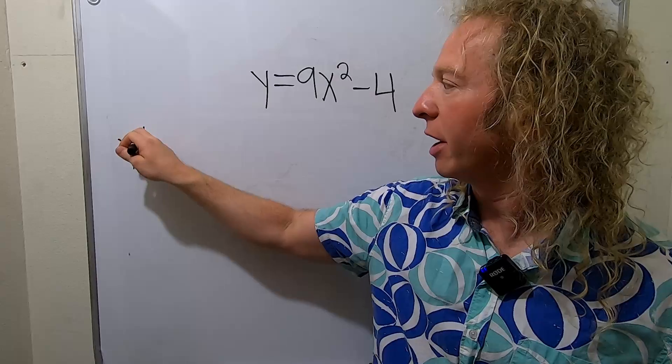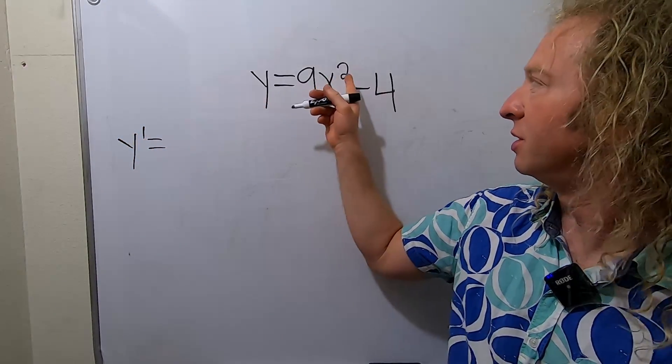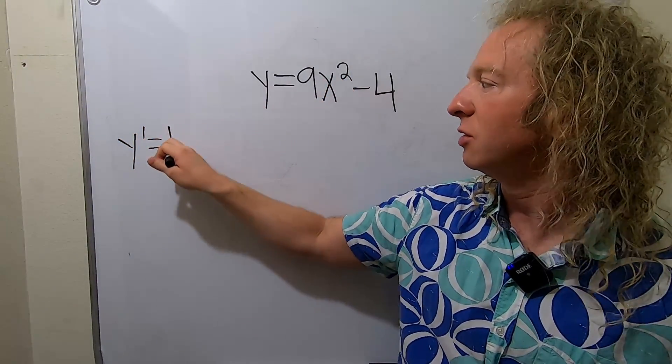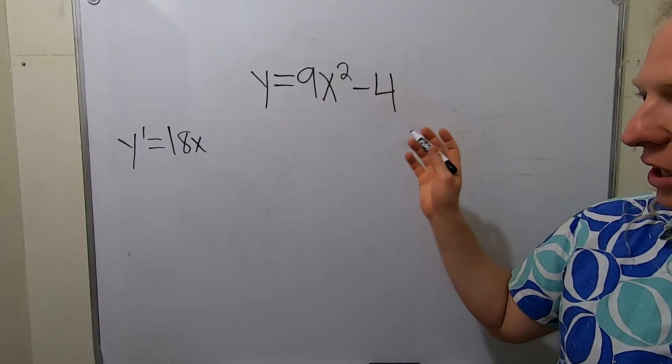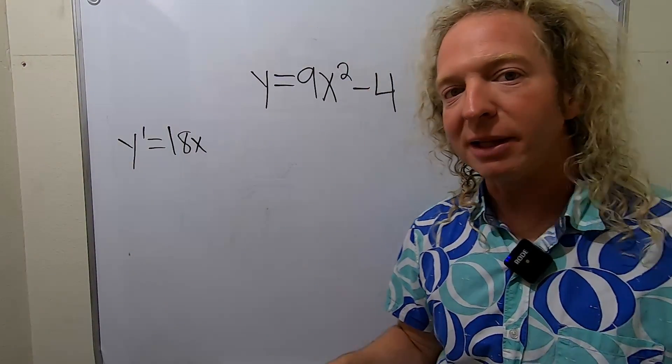You might say y prime is equal to—let's see, 2 times 9 is 18—so you would get 18x, and the derivative here is 0, so you'd be done. If you want to use Leibniz notation,